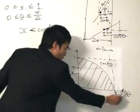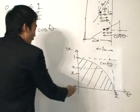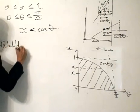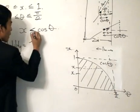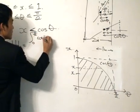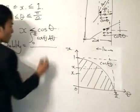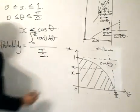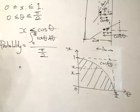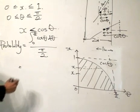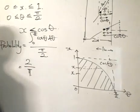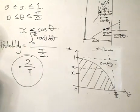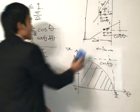The probability equals the integral from 0 to π/2 of cos(θ) dθ, divided by the total area which is 1 times π/2. Using integration, this equals 2/π. So we have used calculus to solve Buffon's problem. Quite interesting.